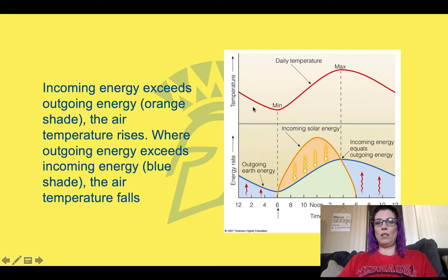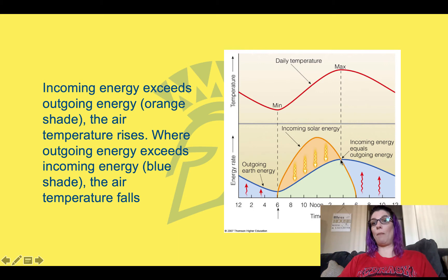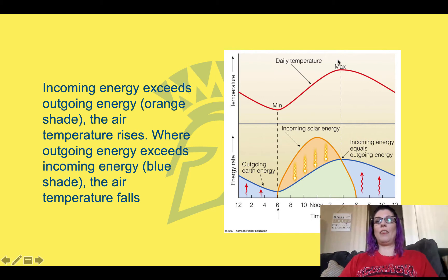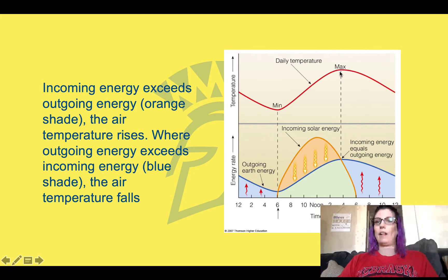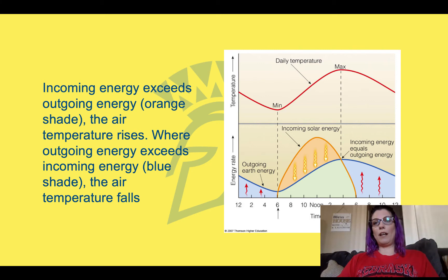You can see right here — this is the time, and this is going to be the energy rate on the bottom half, but on the top half will be the temperature. So right where the outgoing energy and the incoming energy are roughly the same — that's where we're going to hit our maximum temperature for the day. Generally speaking, this is somewhere between 3 and 4 o'clock in the afternoon. We kind of know that — 3 or 4 o'clock in the afternoon it is pretty warm out there compared to even noon. That's where we're going to have the highest temperature.